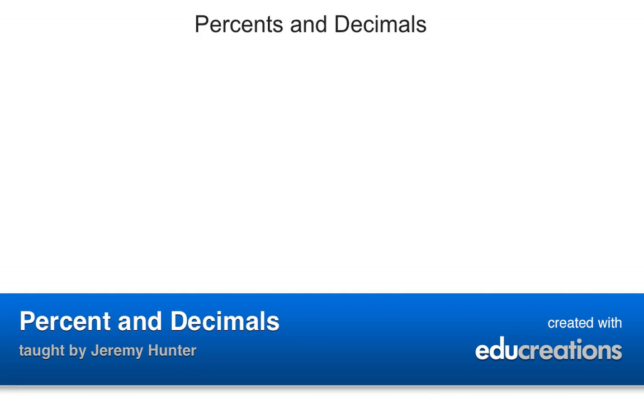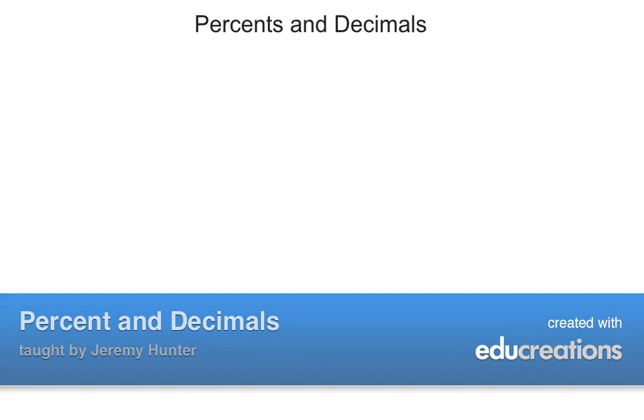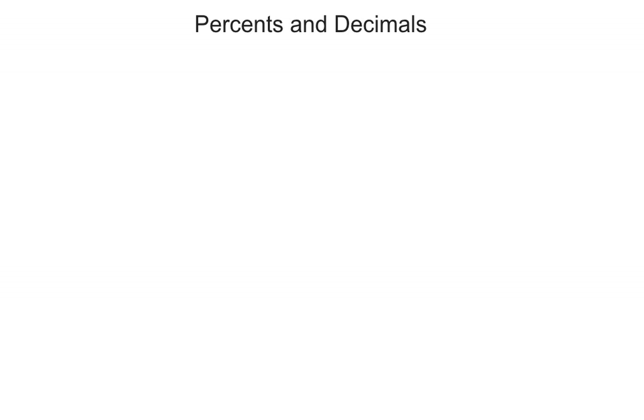Hey everybody, today's lesson is on percents and decimals. As we've talked about in the past, we should really understand that percents, decimals, and fractions all go hand in hand. If I have one type, like a percent, I should be able to make that a decimal or a fraction, and I should be able to go the other way too — decimals back to percents, fractions back to percents.